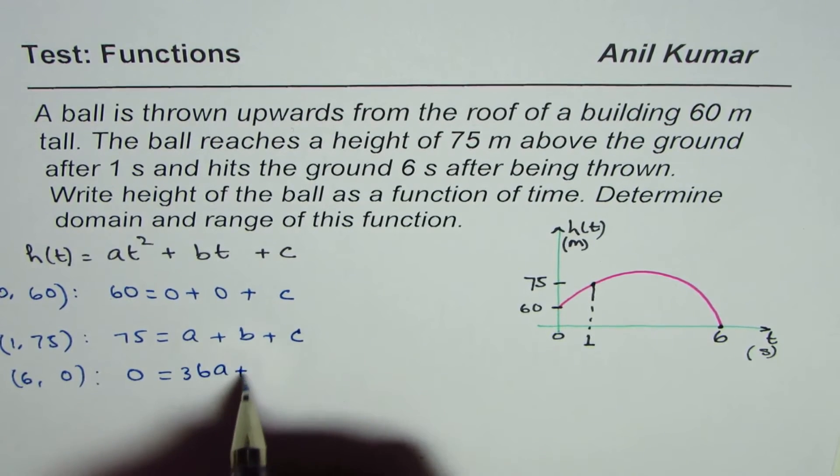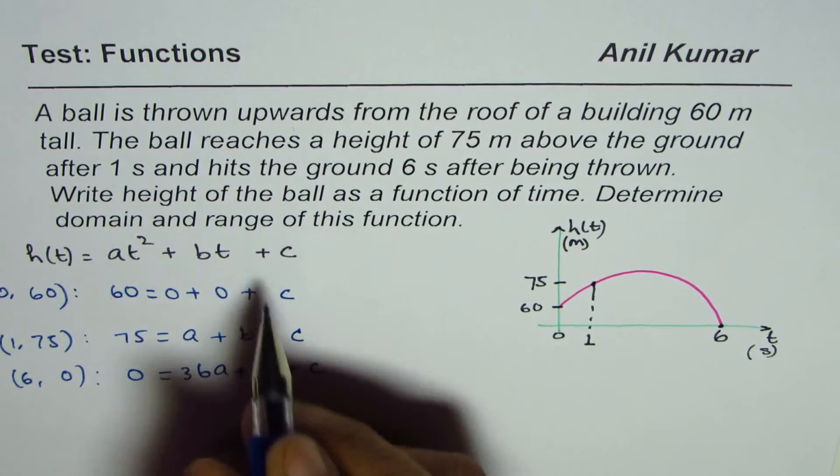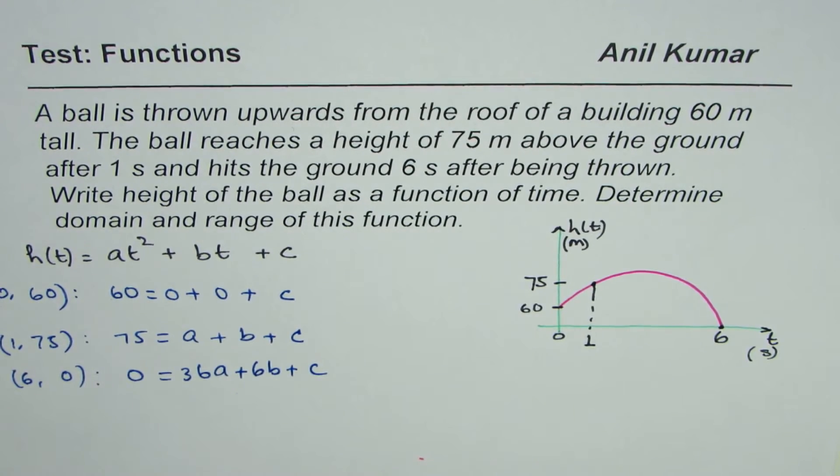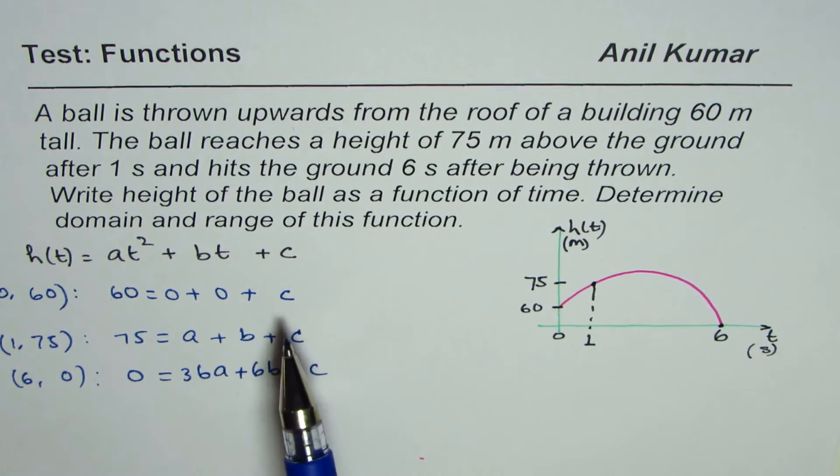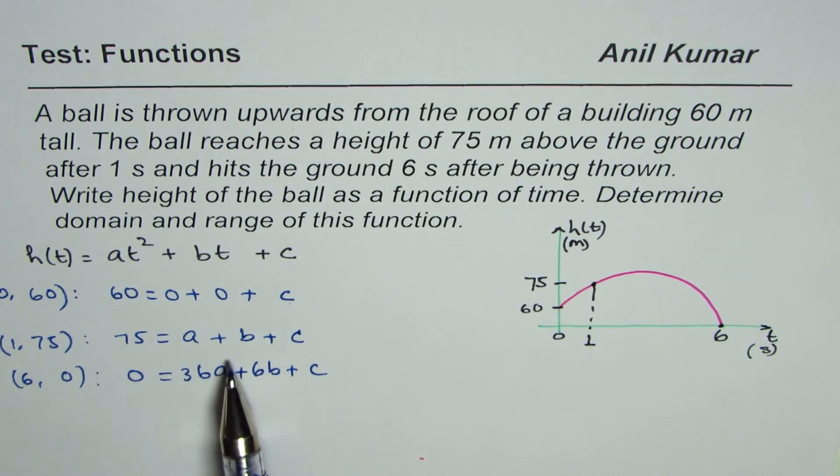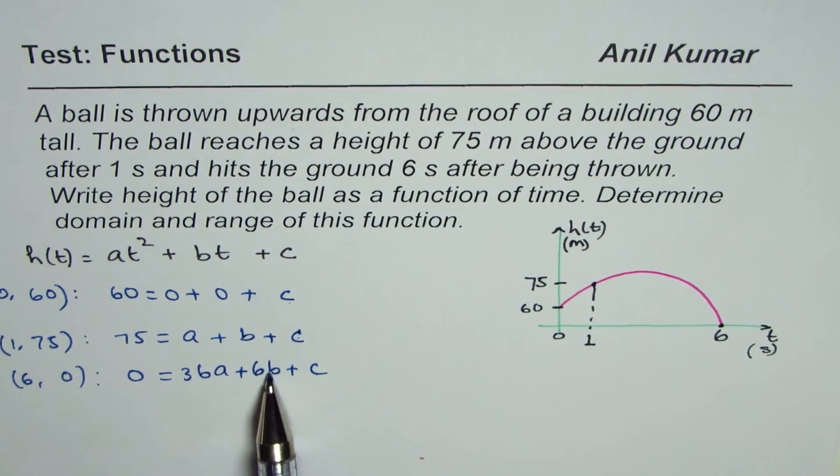The third one will be 0 equals to, substitute 6 here, you get 36a plus 6b plus c. So these are the three equations to solve. Clearly c is 60, and now we know c is 60, so we are left with two variables and two equations.